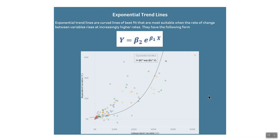The third option available in Tableau is exponential trendlines. Exponential trendlines are curved lines of best fit most suitable when the rate of change between variables rises at an increasingly higher rate. Like logarithmic trendlines, exponential trendlines are not defined for negative values of y, so the model should be avoided when the field on the row shelf contains many negative values, since those marks will be filtered out. An example is the spread of a virus — this is reminiscent of COVID spread, where one infected person can infect multiple new people and the virus spreads exponentially.